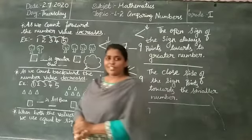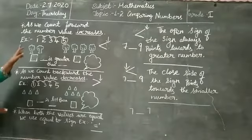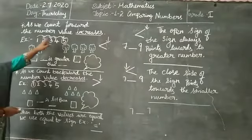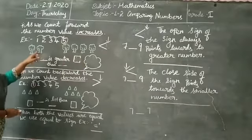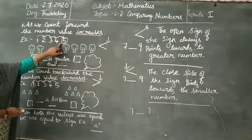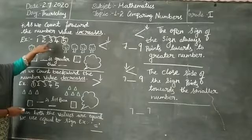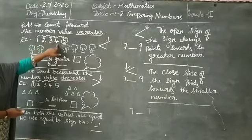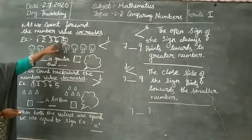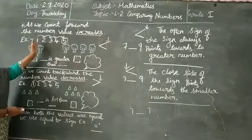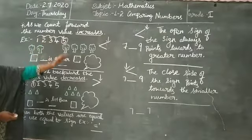Children, always remember, as we come forward, the number value increases. For example, here you can see 5 is greater than 1, 2, 3, 4. So counting forward.